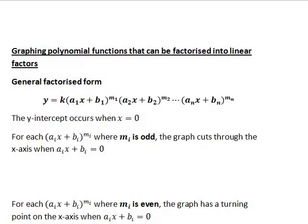In this recording we shall look at graphing polynomial functions that can be factorised into linear factors. A linear factor has form ax plus b, and a polynomial that could be factorised into a series of such linear factors would have form y equal to constant k times the first linear factor a₁x plus b₁ to some positive integer power m₁, and then a series of other factors as shown.